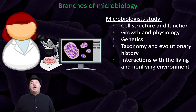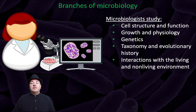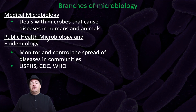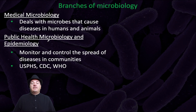What are the branches of microbiology and the professions people can go into in this field? Microbiologists study cell structure and function, growth and physiology, genetics, taxonomy and evolutionary history, and interactions with the living and nonliving environment. We have medical microbiology, which deals with microbes that cause diseases in humans and animals, and public health microbiology and epidemiology, which monitor the control and spread of diseases in communities — organizations such as the CDC, the Center for Disease Control and Prevention, or WHO, the World Health Organization.